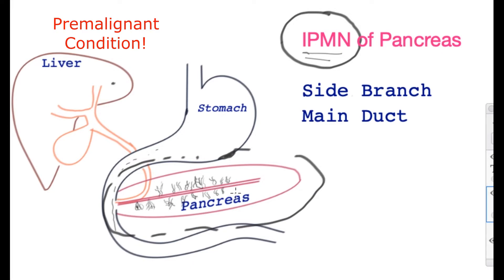The pancreas has two main functions. It produces insulin, and that is important in preventing diabetes. The other main function is producing a clear fluid that travels down small tubes called side branches. This fluid is produced from the substance of the pancreas and then travels down the main tube, the main duct of the pancreas, towards the small bowel seen over here.